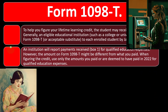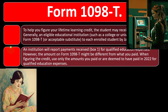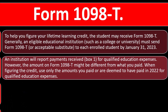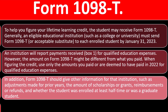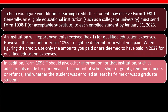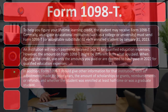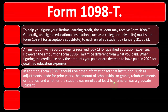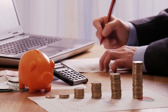The 1098-T may not exactly capture all qualifying expense components. The IRS requires the 1098-T primarily so they can verify that you attended a qualifying institution, even if the number on the form isn't exactly what was used to calculate the credit. The form also provides other information such as adjustments for prior years, the amount of scholarships or grants (which may reduce your qualifying expenses), reimbursements or refunds, and whether the student was enrolled at least half-time.